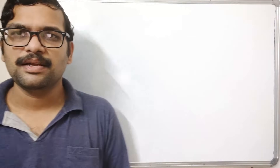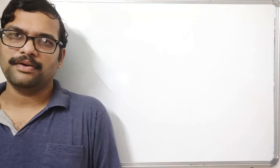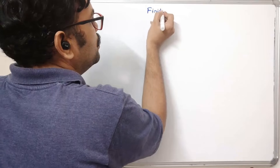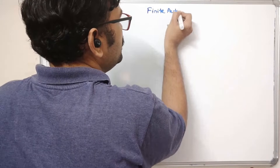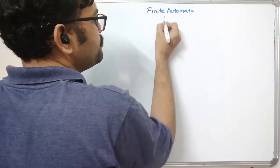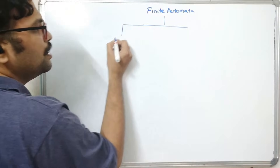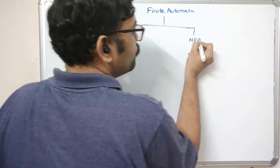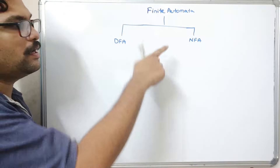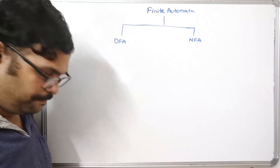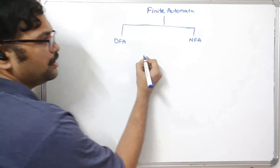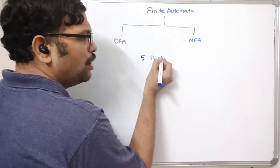Hello friends, welcome back to our channel. In today's session we'll discuss different types of finite automata. In the previous session we saw the introduction: there are different types of finite automata — one is DFA and another is NFA, which is Deterministic Finite Automata and Non-Deterministic Finite Automata. The definition for both these categories is equal — it's a five-tuple.